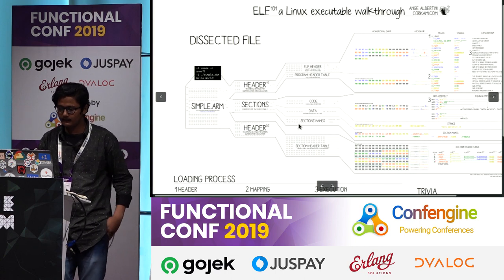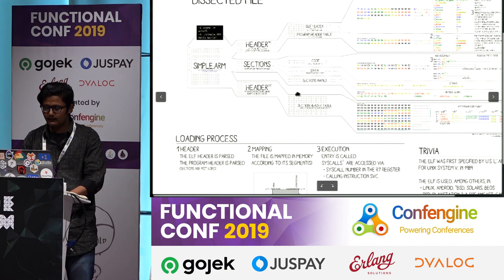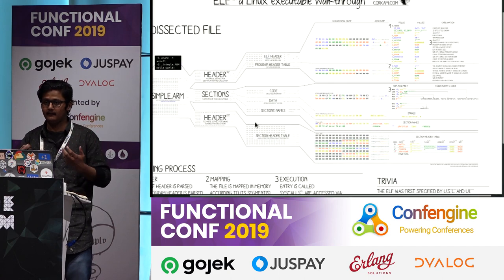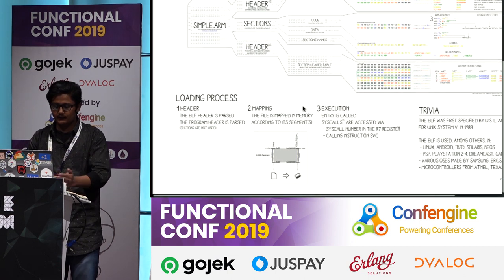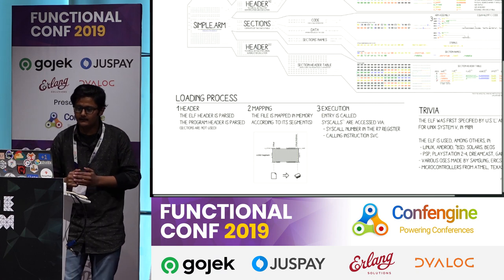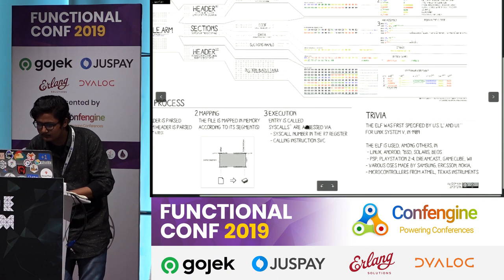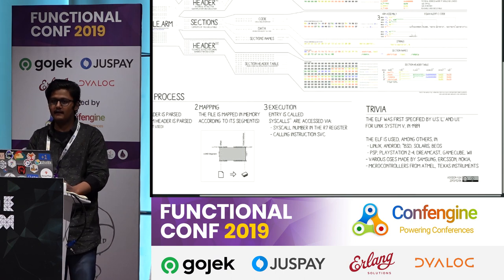Any Linux executable — we're talking about Linux executables — these object and executable files have certain sections. The first is the ELF header, which is the part we're talking about, and then we have sections and more. This describes what an actual native executable looks like — it's composed of a header, program header parsed, and so on. So what an ELF is should be clear to everyone now.